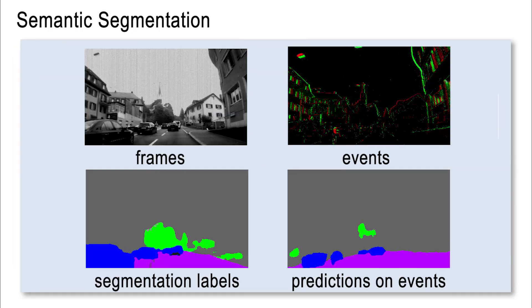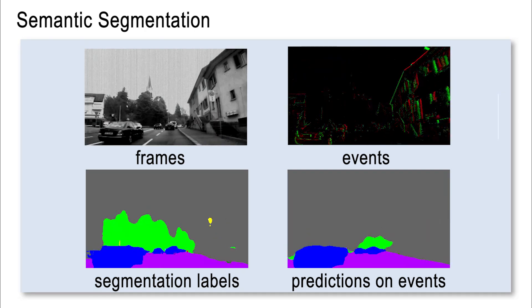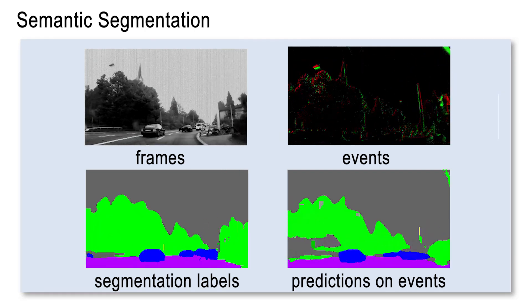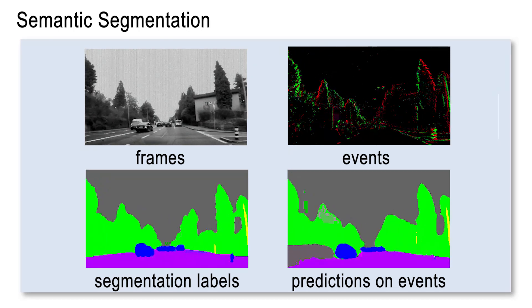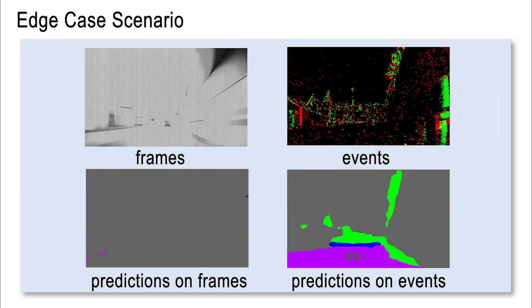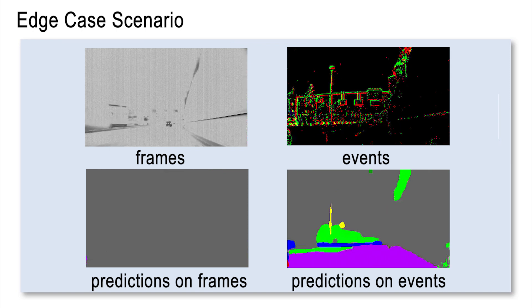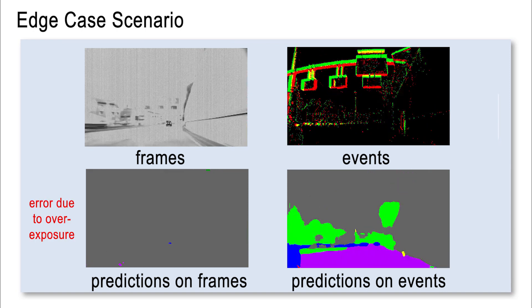In addition, we evaluate our method on the semantic segmentation task where, after fine-tuning on real data, we achieve state-of-the-art performance. Despite being trained on synthetic events, our network leverages the properties of the event camera to perform robustly in challenging edge case scenarios.